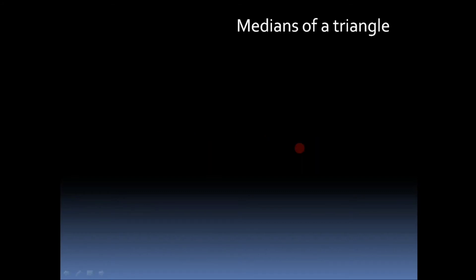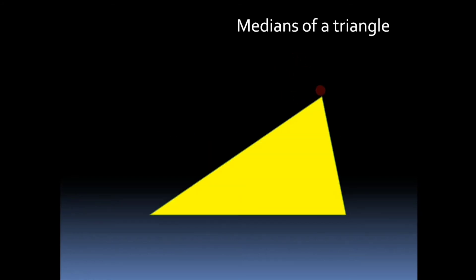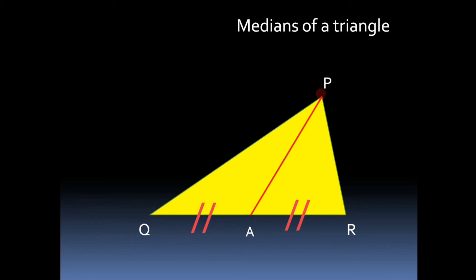Now let us look at the next concept — the median of a triangle. Consider triangle PQR. If A is the midpoint of segment QR and we draw a segment joining A and P, then segment PA is the median of the triangle. A median is defined as a segment joining a vertex of a triangle and the midpoint of its opposite side.